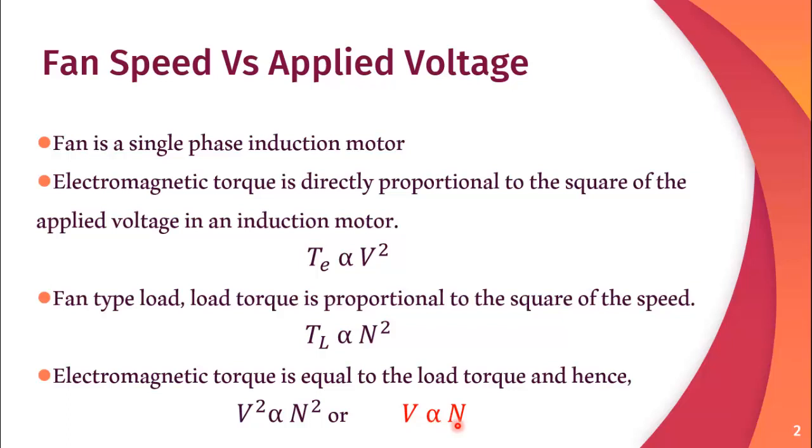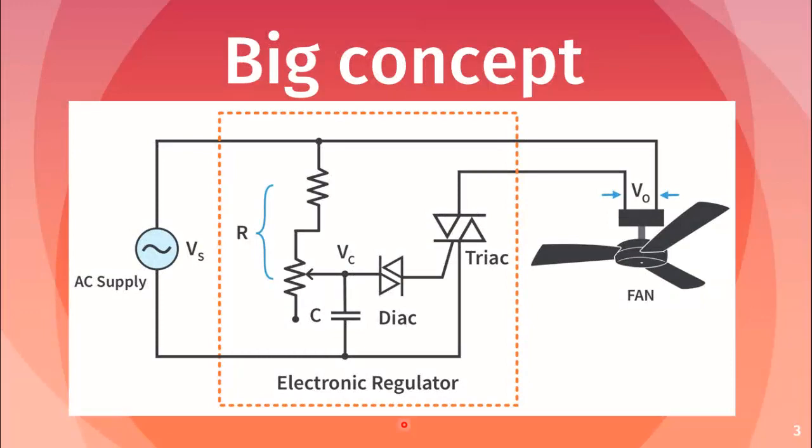So here we can see that the speed of the fan can be changed by changing the applied voltage. So how we can change the applied voltage? We can do this with the help of an electronic regulator.